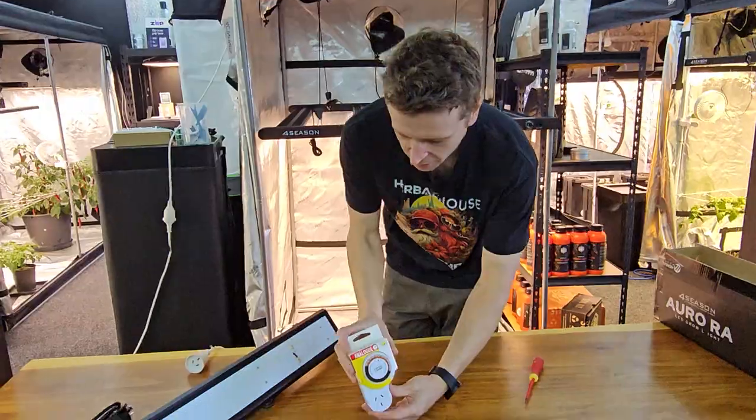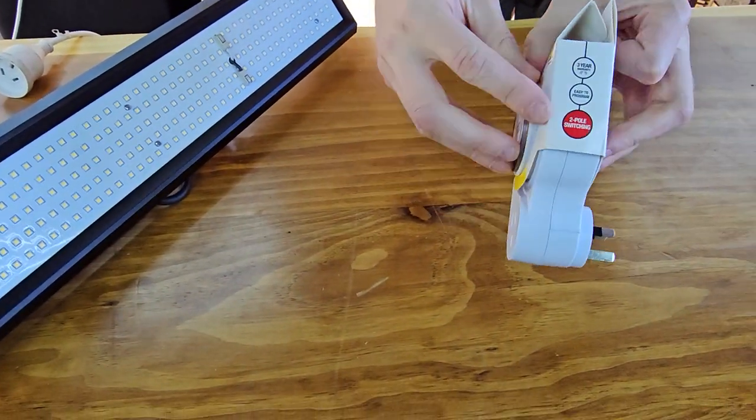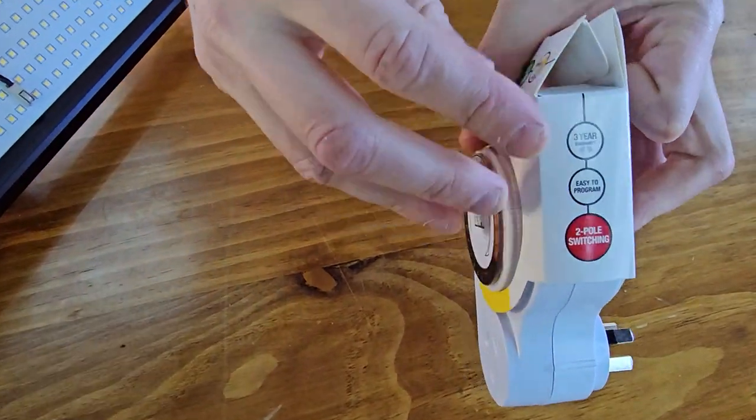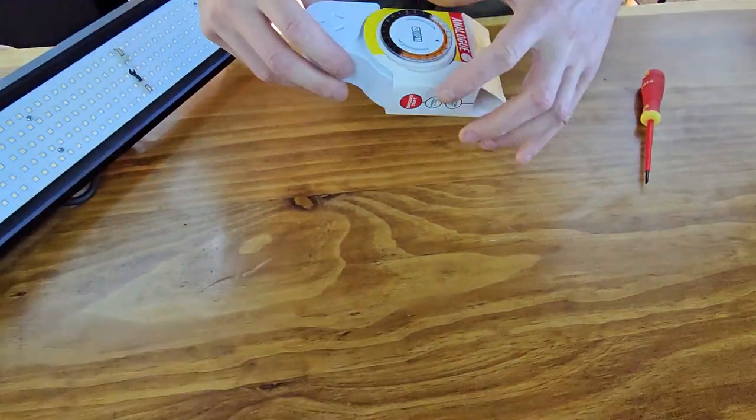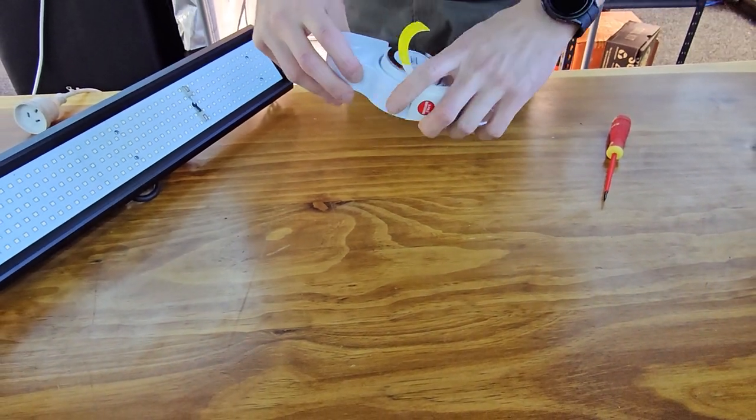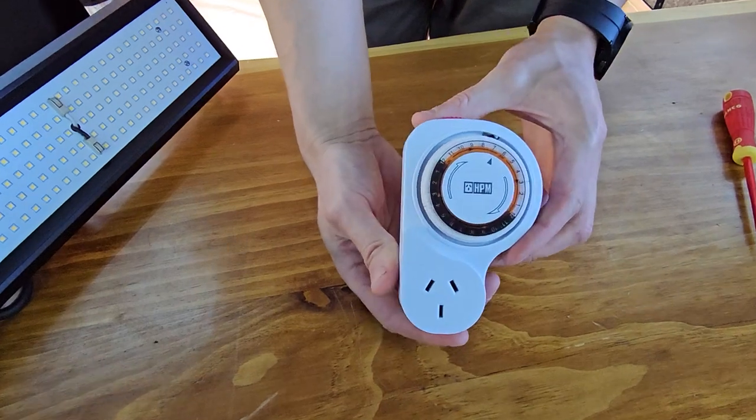So first of all, what we're going to do is just unpackage it. Now I will actually mention on all of these timers you are now receiving, they are actually two-pole switching. Now for a lot of you out there, you probably don't know what that means, but it's a good thing. It means that this timer is effectively switching the phase and neutral on the pins there. So good for equipment that needs to be completely isolated.